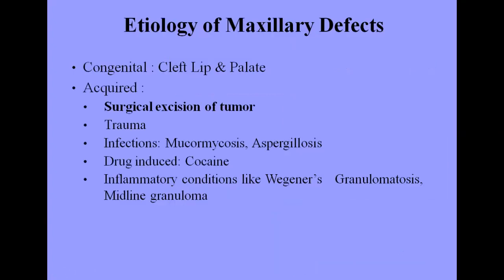We all know that there are various etiologies for maxillary defects. It can be congenital like cleft lip and palate, it might be acquired due to surgical resection of tumor, or it might be traumatic. Certain infections like mucormycosis or aspergillosis may also lead to these maxillary defects. Before a few months, we came across so many maxillary defects due to post-COVID mucormycosis. These defects can also be drug-induced, such as cocaine, or due to inflammatory conditions like Wegener's granulomatosis or midline granuloma.